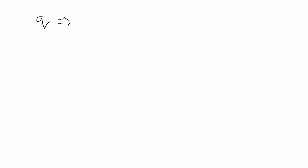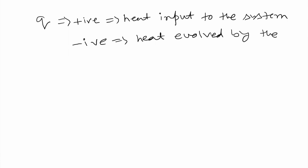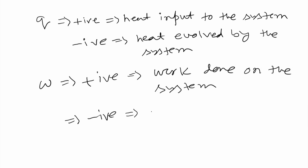There is an international convention for work and heat. For heat Q: positive means heat input to the system, negative means heat evolved by the system. Similarly for work: positive means work done on the system, and negative means work done by the system. These are the conventions we will use throughout this course.